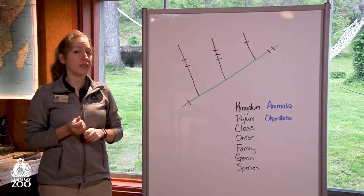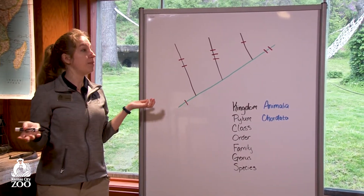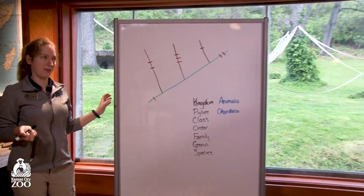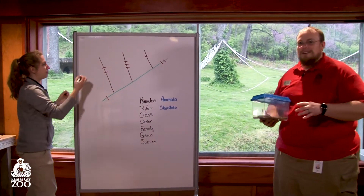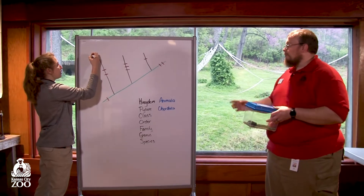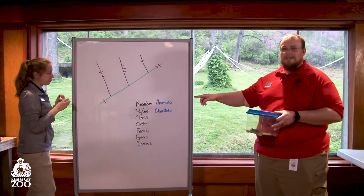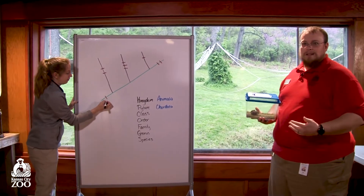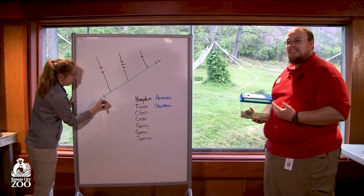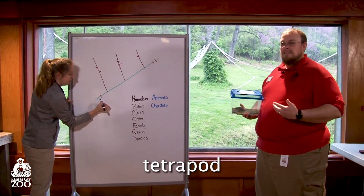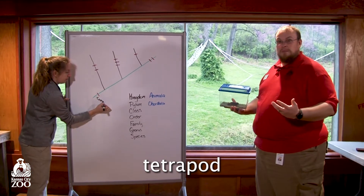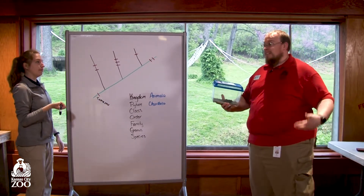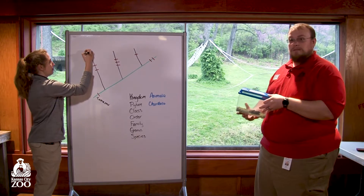Our first class — remember we're moving down a level — is Amphibia, and that should sound a little familiar. You might also notice that before we even get to Amphibia, we do have one characteristic on the tree: everything in Chordata is what is called a tetrapod, meaning it has four limbs of some kind. It might have four legs, or arms and legs like us — whatever, there are four of them.